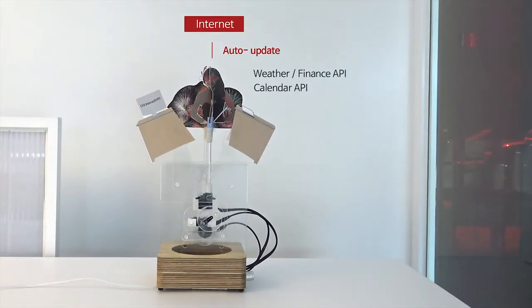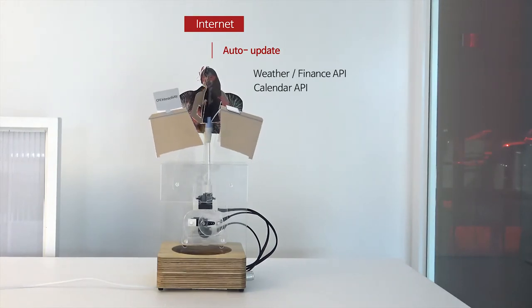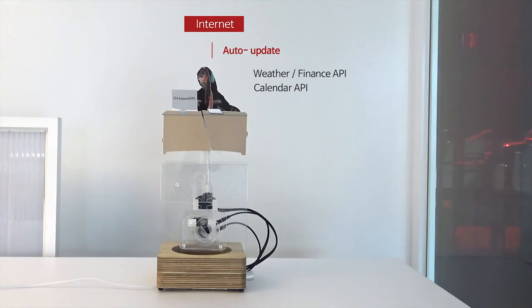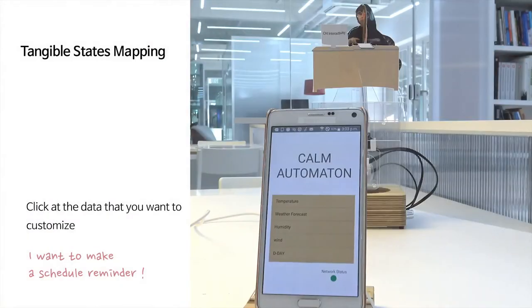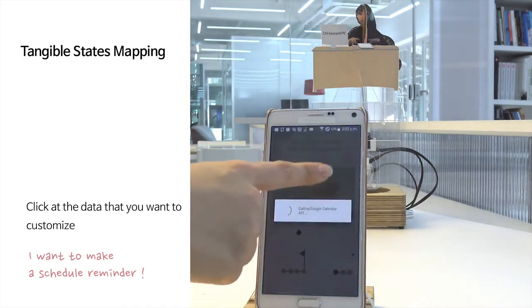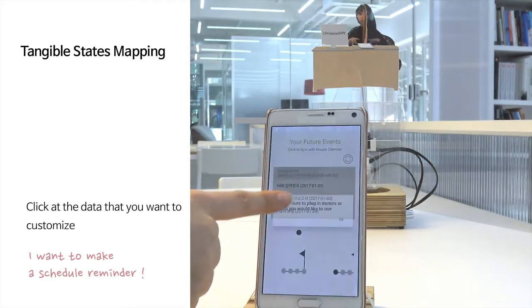Users can customize weather, finance, and schedule reminders, and the automaton automatically changes shape according to the data fetched from the internet. To map the data, click the data you want to customize. Here we will set the display to change with important timed events in the workplace.